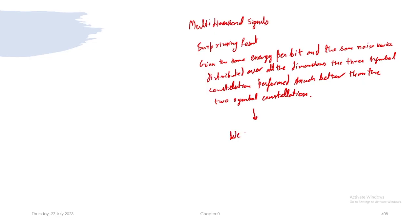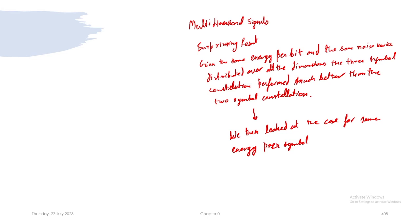What do we do about this unexpected result? We changed the comparison to the same energy per symbol, and the 3-symbol constellation was still performing better than the 2-symbol constellation. This is rather unexpected, but theoretically if we try to justify it, it fits well within our notion of the union bound. Let us first look at it theoretically and then go to the simulation results.